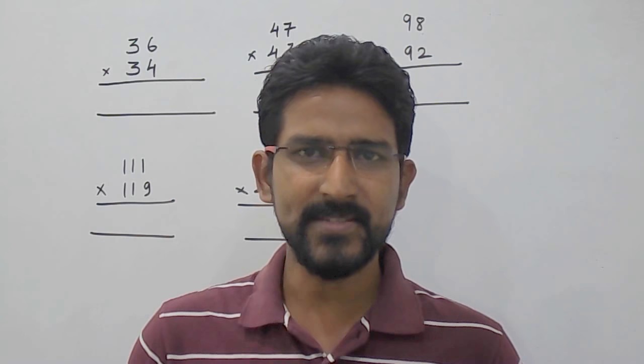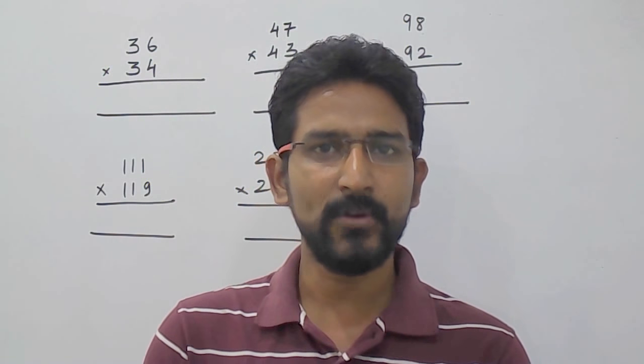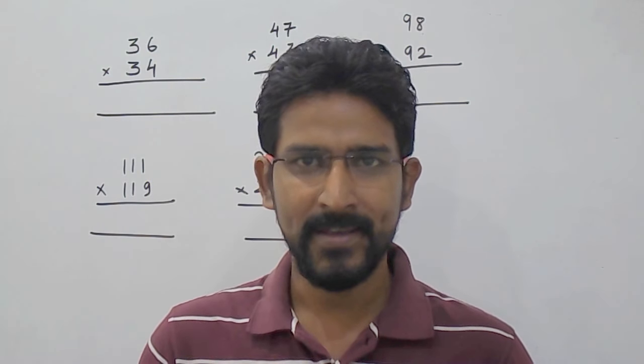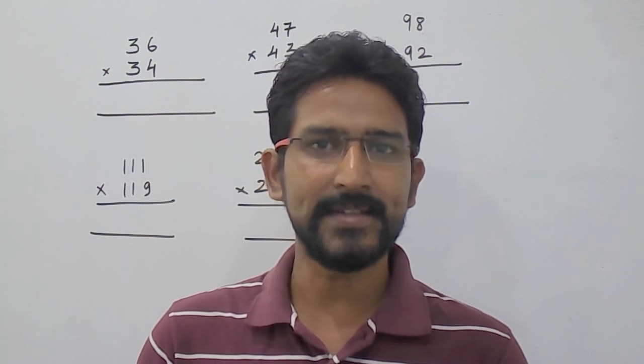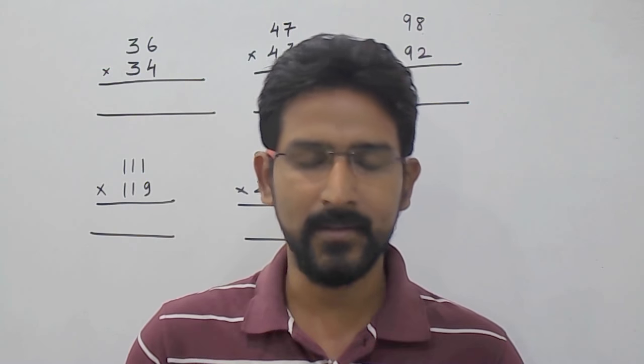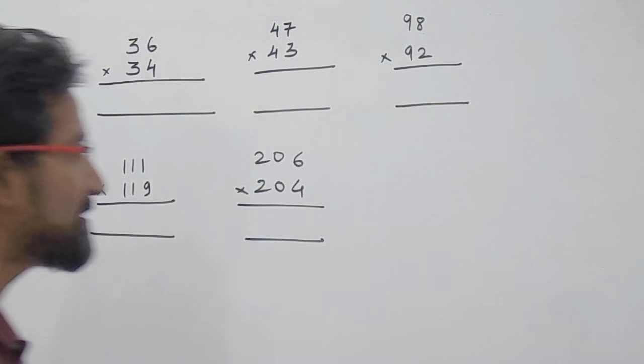But this trick is only applicable for numbers whose unit place add up to 10 and the remaining digits, i.e. 10s place are same. And if it is a 3-digit number, then 10s place and 100s place are same. We will see some examples here.